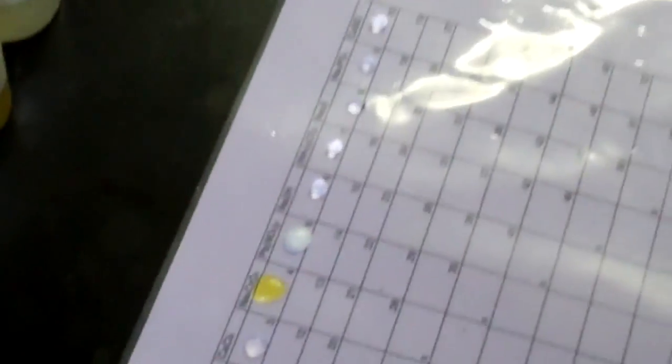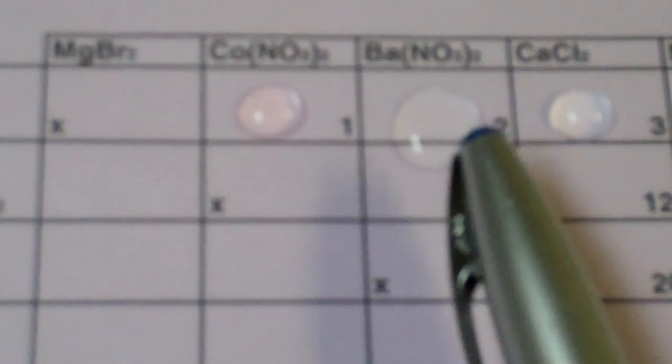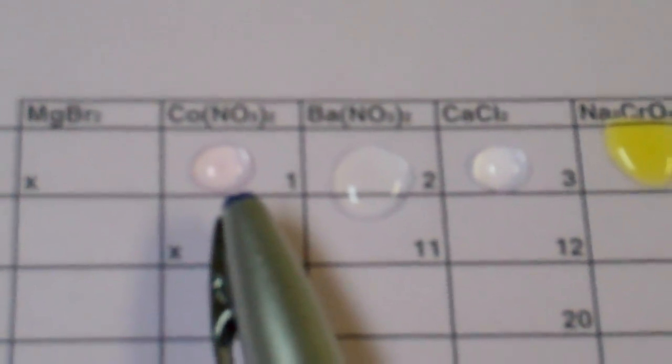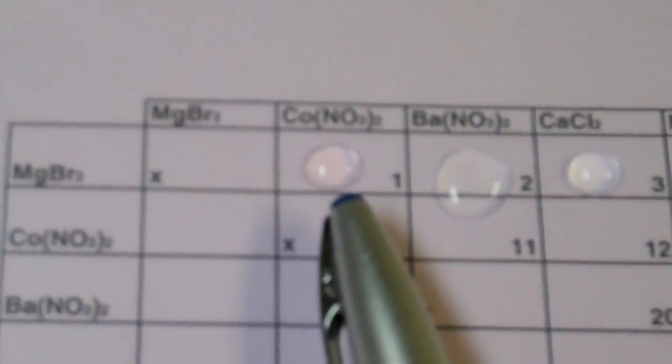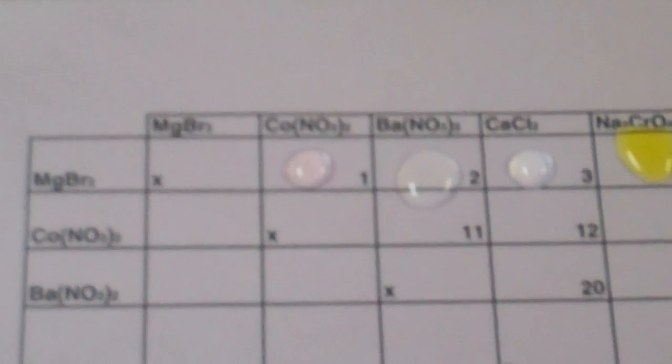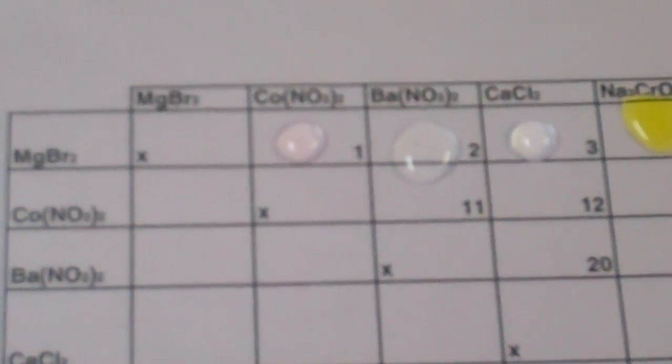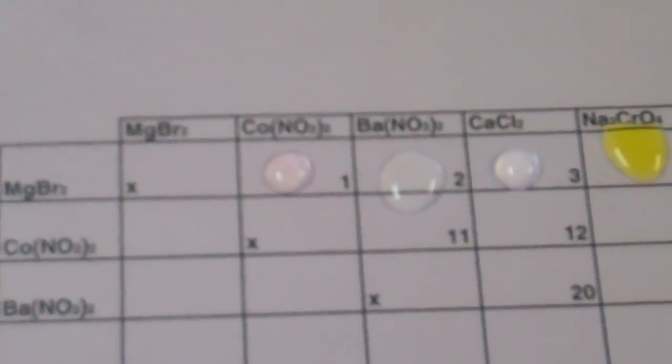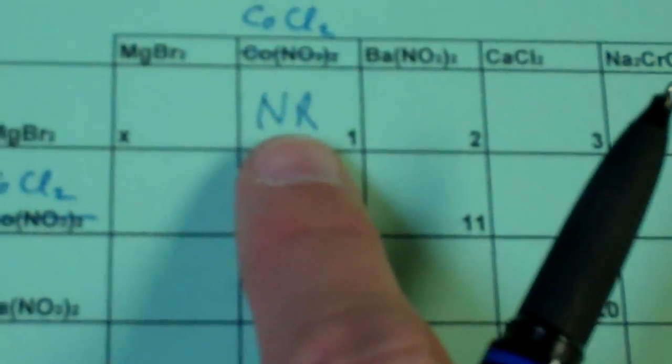Now, your job will be to examine these and record on your data table whether or not a reaction has occurred. So, if you look carefully at this first square here, labeled number one, there are magnifiers in the classroom. You will look to see if a reaction has occurred. Now, we will know a reaction occurs if a precipitate is formed. In this particular case, no reaction has occurred. No precipitate is formed. So, on my data table, on box one, I am just going to simply write the letters NR, so that I know when I go home that no reaction occurred there.